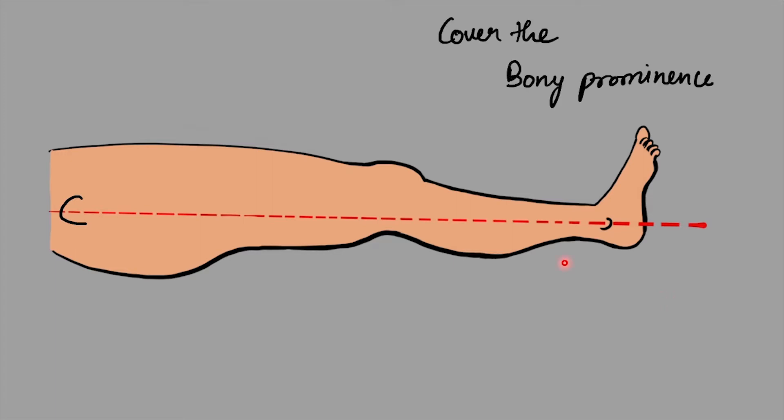Before applying these straps we have to cover the bony prominences around the ankle joint, which are the medial and lateral malleolus, and around the knee joint, which is the fibular head. These bony prominences are covered using cotton or foam rubber.